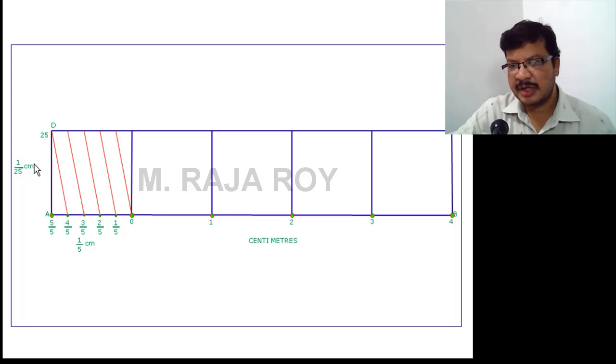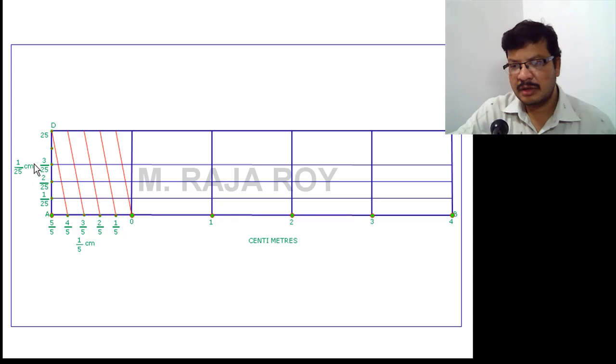To get 1/25 cm, divide this height into 5 equal parts. Then, this is 1/25 cm, this is 2/25, 3/25, 4/25, and finally, that is 5/25.